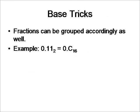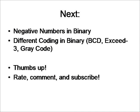Alright, so that's it for this video. Coming up next, we are going to have negative numbers in binary. We will look at negative digits, ones complement and twos complement, and we will also look at different coding in binary, such as binary coded decimals, excess three, and the gray code. Also, later on in a couple videos down the road, I'm going to start to do binary algebra and binary arithmetic. So if you liked this video, please thumbs up, rate, comment, and subscribe to my videos. Thank you for watching.